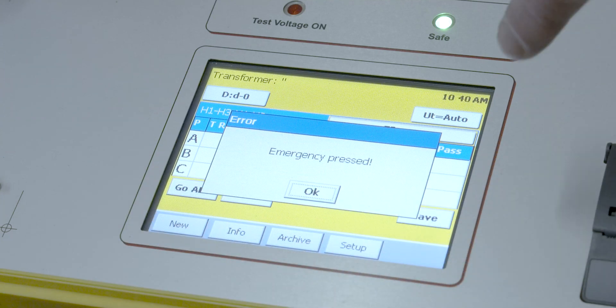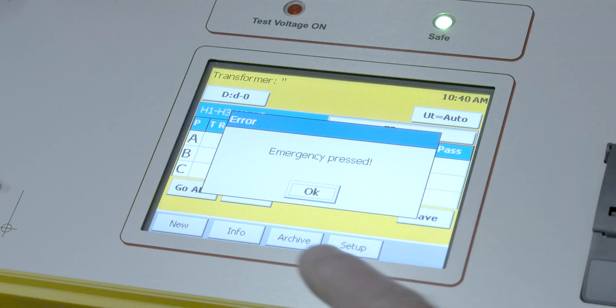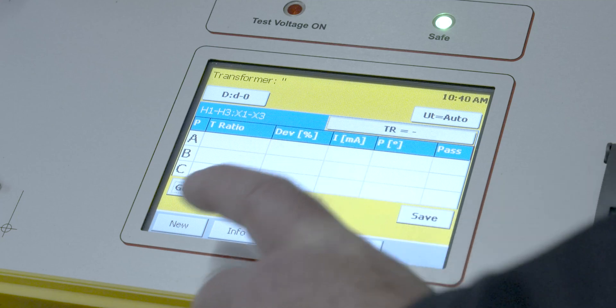But we've pressed the emergency stop button. So we get that indication. We have to twist that stop button to release it and then press okay to clear that message on the test set. And once again we're going to have to tell it to go do those tests.